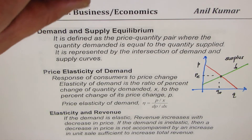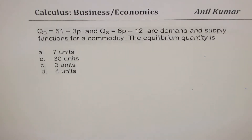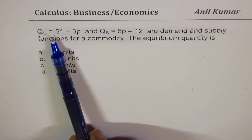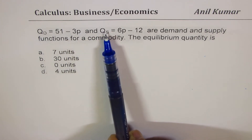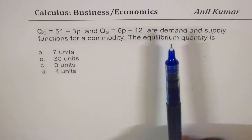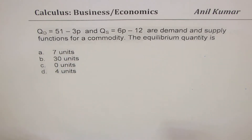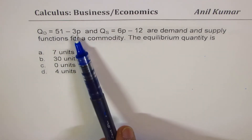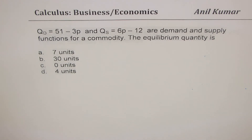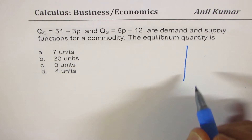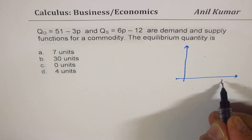Let's take up an example. The first is a multiple choice question on demand and supply: Q_d equals 51 minus 3p is the demand function and Q_s equals 6p minus 12 is the supply function for a commodity. We need to find the equilibrium quantity. Since quantity is written as a function of price, we put price along the x-axis and quantity along the y-axis.